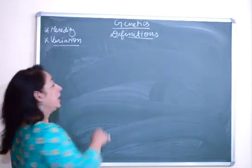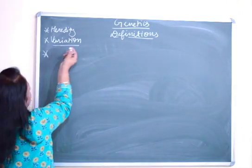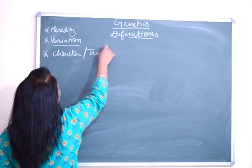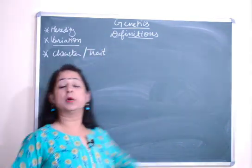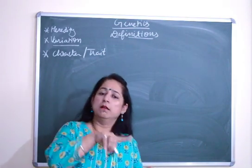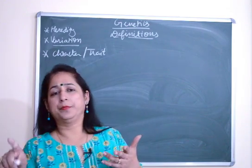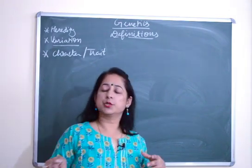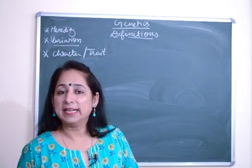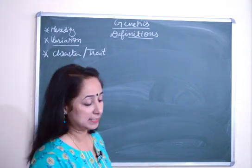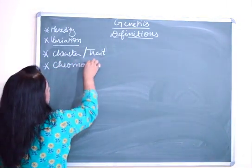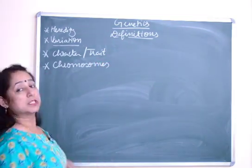Next is what is a character and what is a trait — they are one and the same thing. A character or trait is whatever you can observe visibly, such as black hair, black eyes, gray eyes, or brownish skin tone. These visible features are called characters or traits.